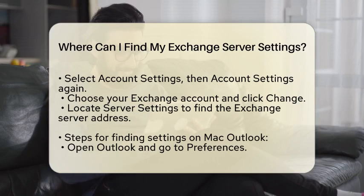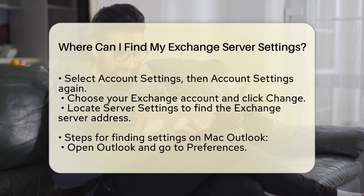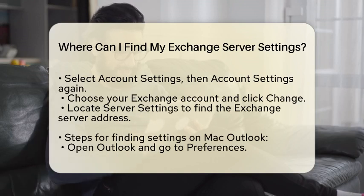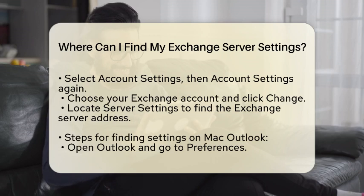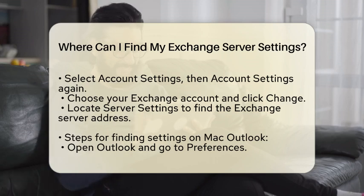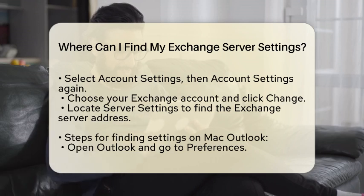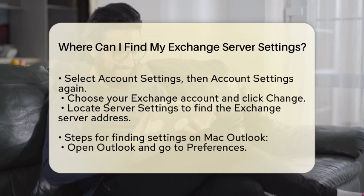If you are using Outlook on a Mac, the process is slightly different. Open Outlook and go to Preferences found under the Outlook menu. Then select Accounts and find your Exchange account in the list. Click on it and then hit the Advanced button. Under the Server tab, you will see the Server name displayed in the designated field.